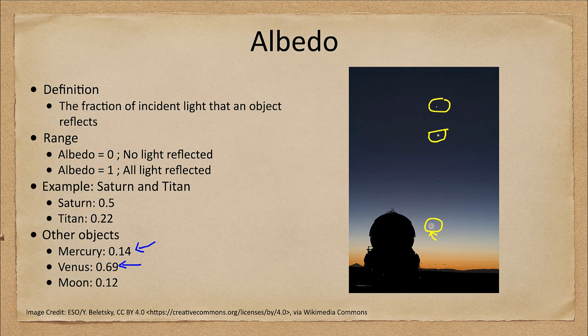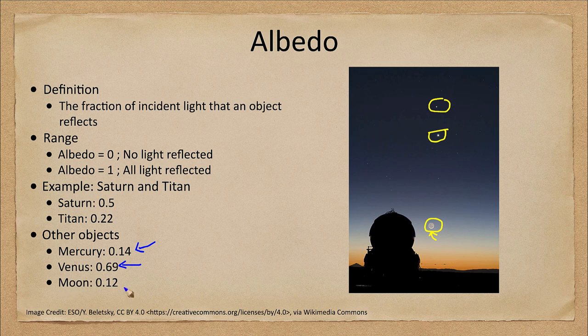Mercury looks a lot fainter because it reflects much less light. Even if you put Mercury and Venus at the same distance from the Sun, Mercury only reflects one-fifth the light that Venus does, so Mercury would look five times fainter in the sky than Venus just because of the amount of light reflected. Of course distance also plays a role — if something is further away it's going to look fainter. For comparison, our Moon is the second brightest object in the sky but does not reflect a lot of light.